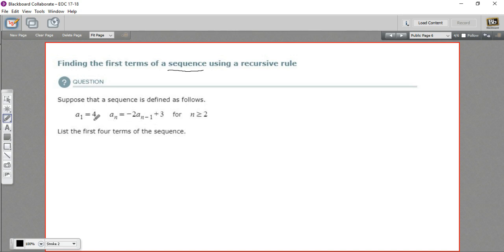It's not too difficult, really, but there is some terminology that you might not be used to. In this case, it says a sub 1 equals 4, and then it says a sub n equals negative 2 times a sub n minus 1, whatever that is, plus 3.